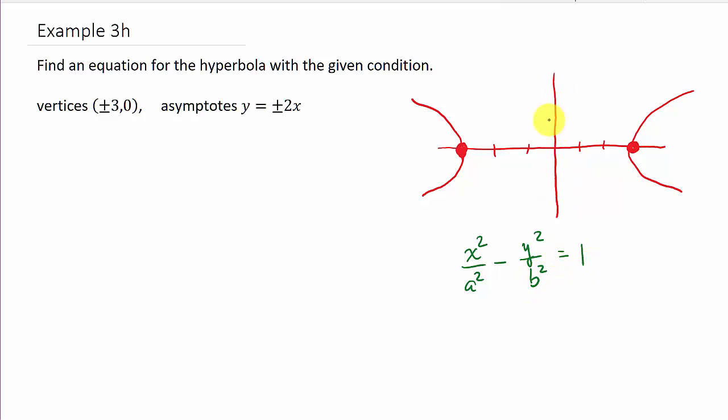Now remember, if this was opening up and down, the Y squared would be over here. It would be Y squared over A squared minus X squared over B squared. But it's opening left and right, so we've got this.